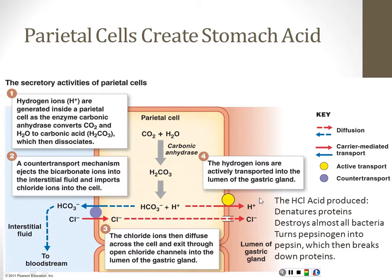Why is acid important? One of the things it does is turn pepsinogen into pepsin, and then pepsin starts breaking up proteins. One of the principal roles of the stomach is protein digestion — much of the protein digestion in our digestive tract happens in the stomach. That's why when you eat a meal high in protein, it takes longer for the stomach to empty.